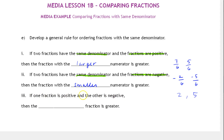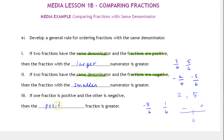Finally, if one fraction is positive and the other is negative — and notice this doesn't require the same denominator, we can always use this rule — the positive is to the right of zero on the number line and the negative is to the left of zero, so the positive fraction is always greater.